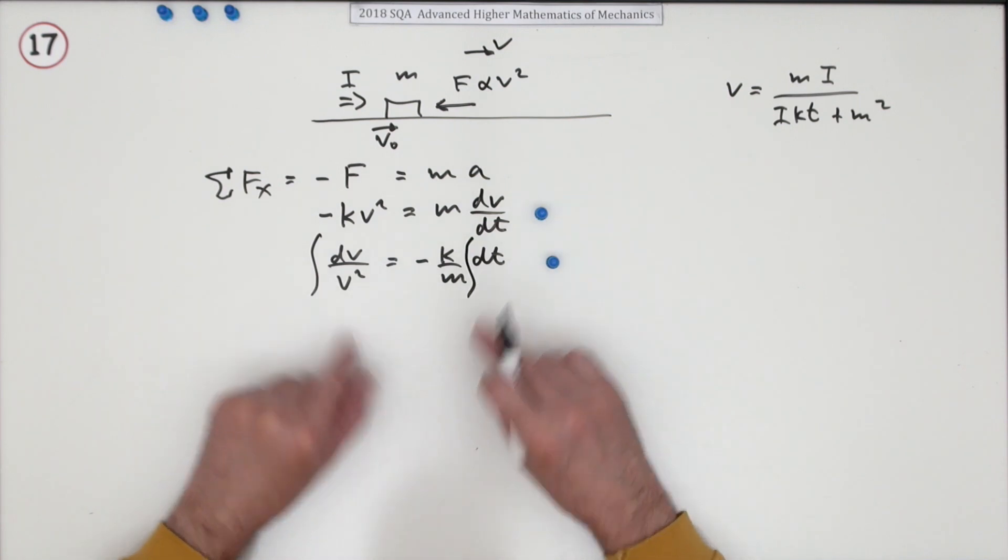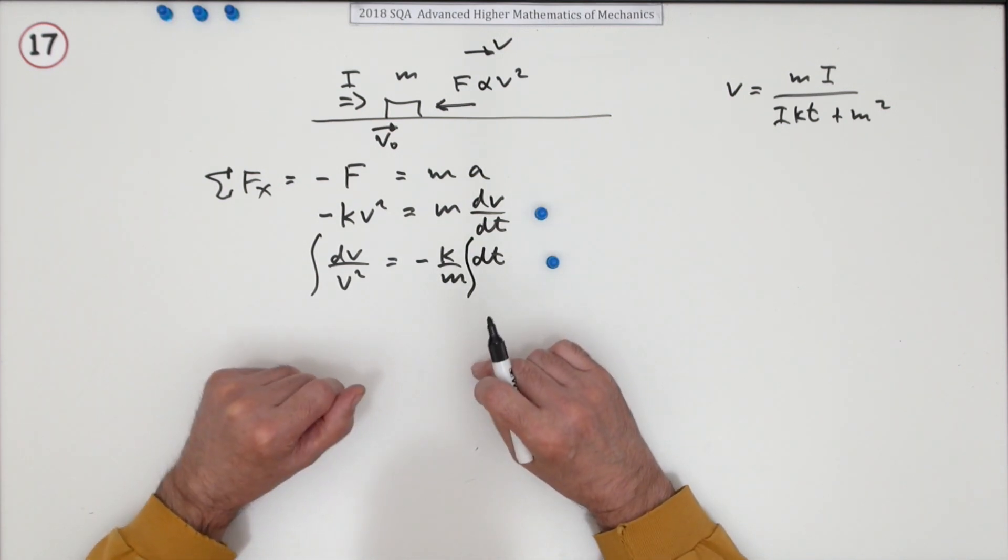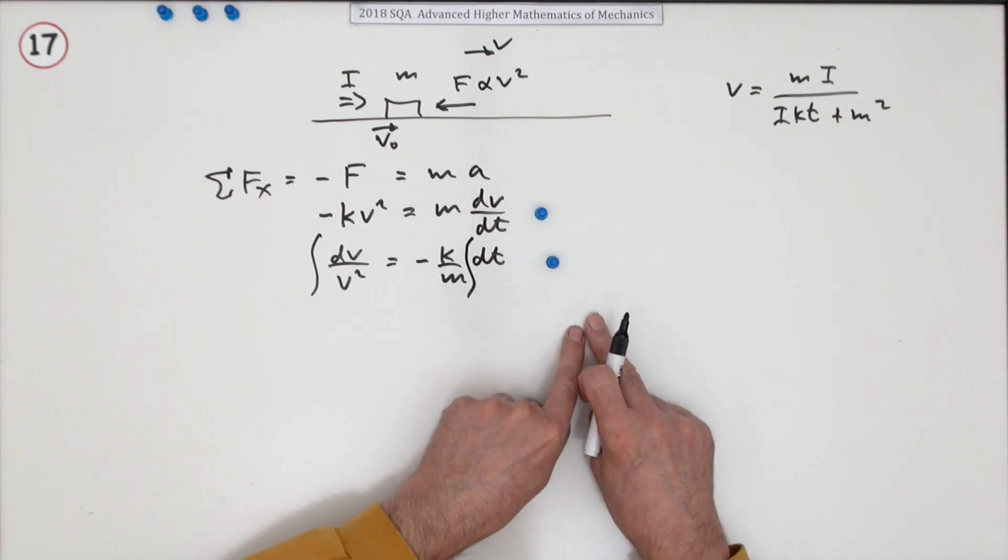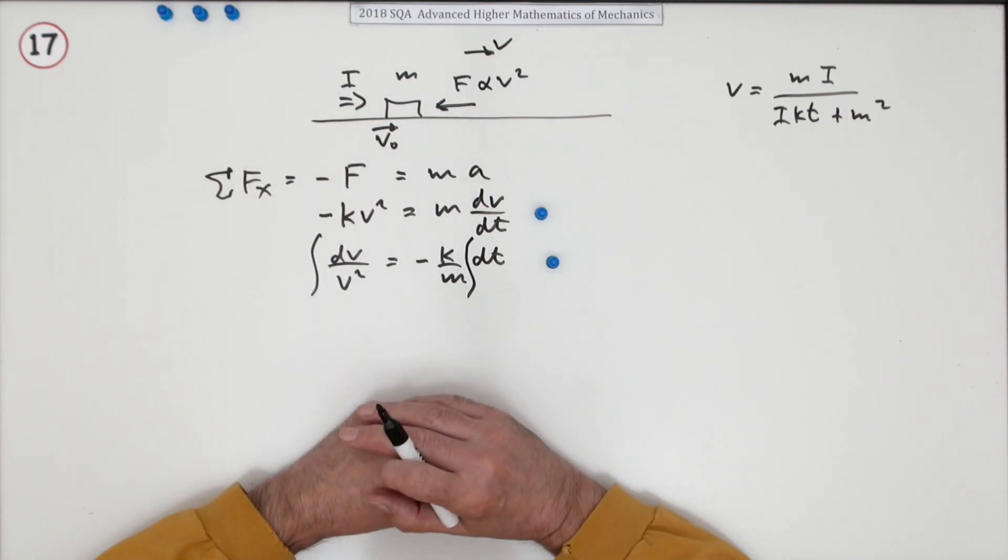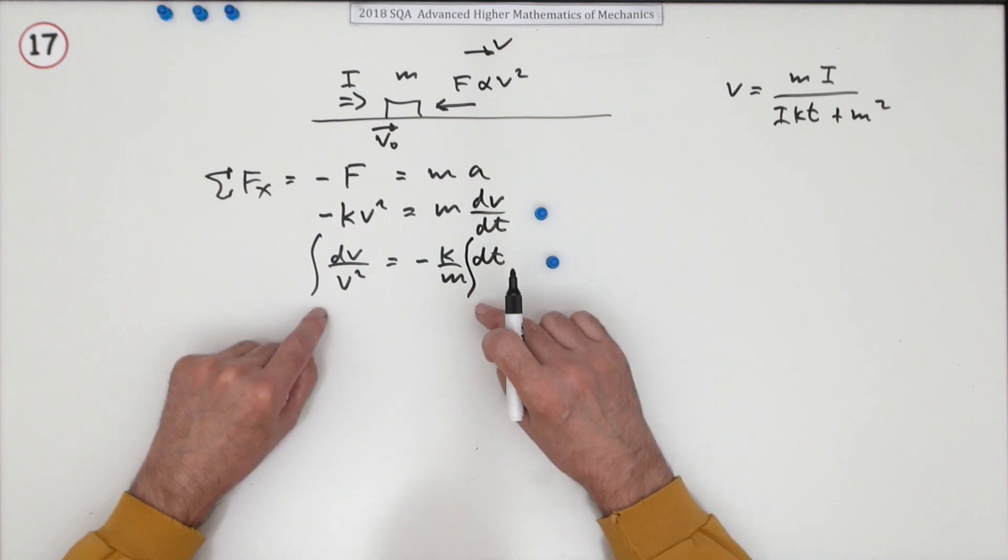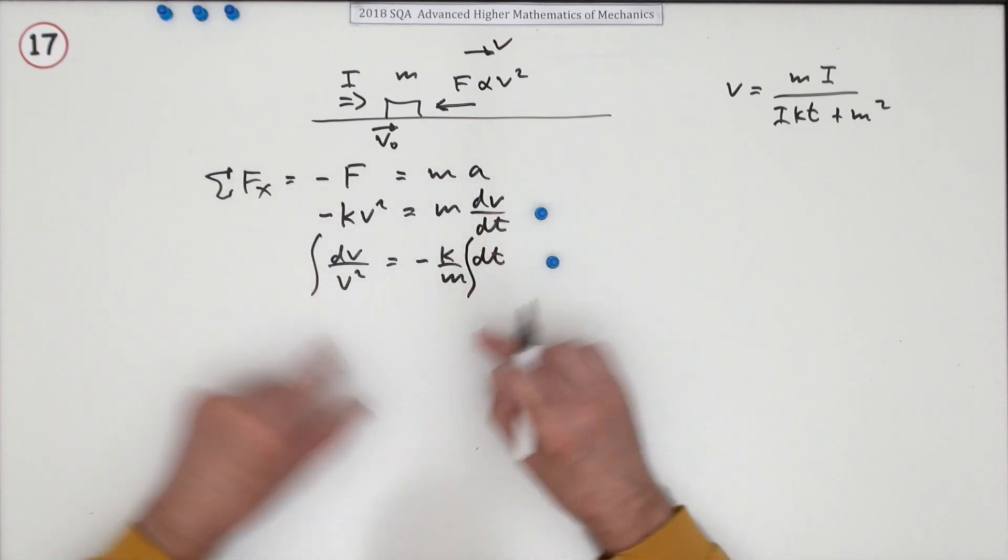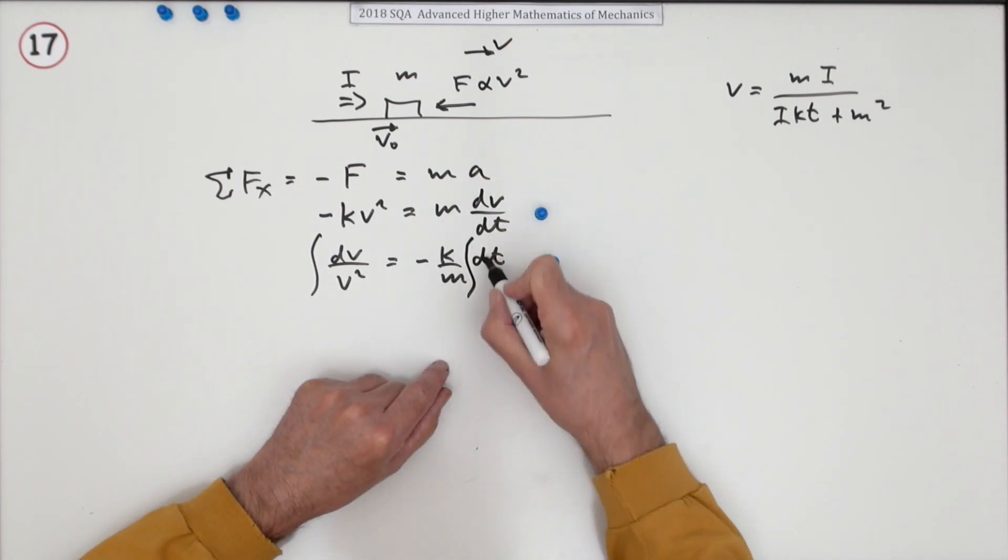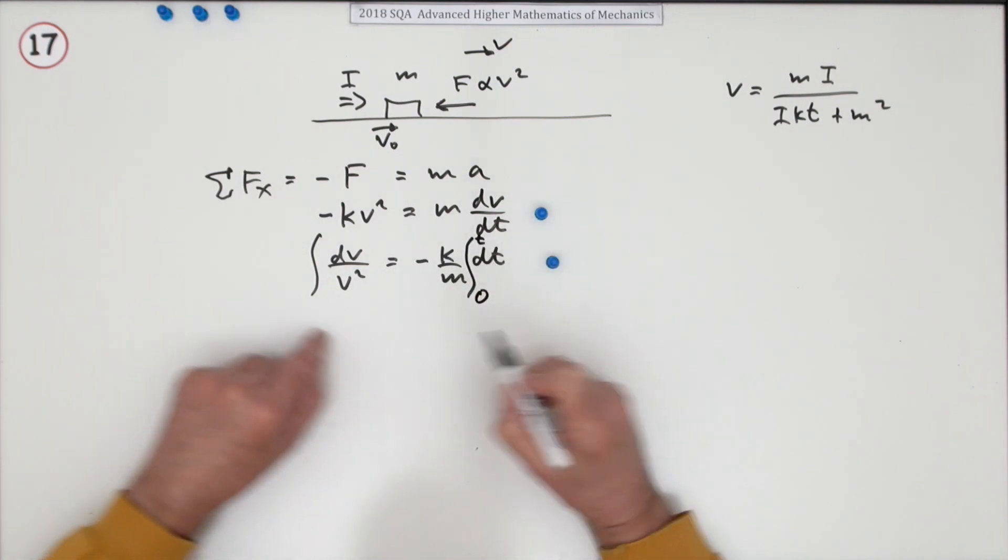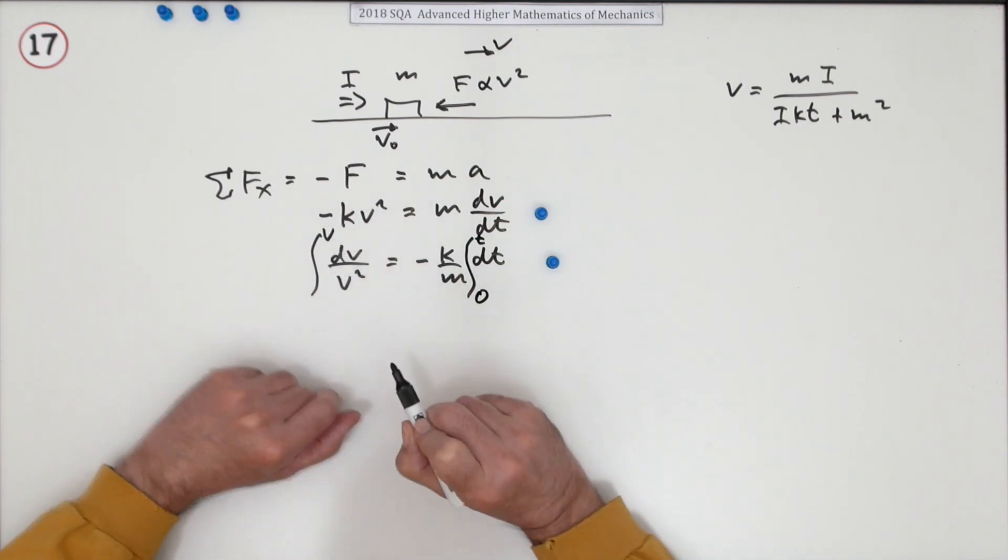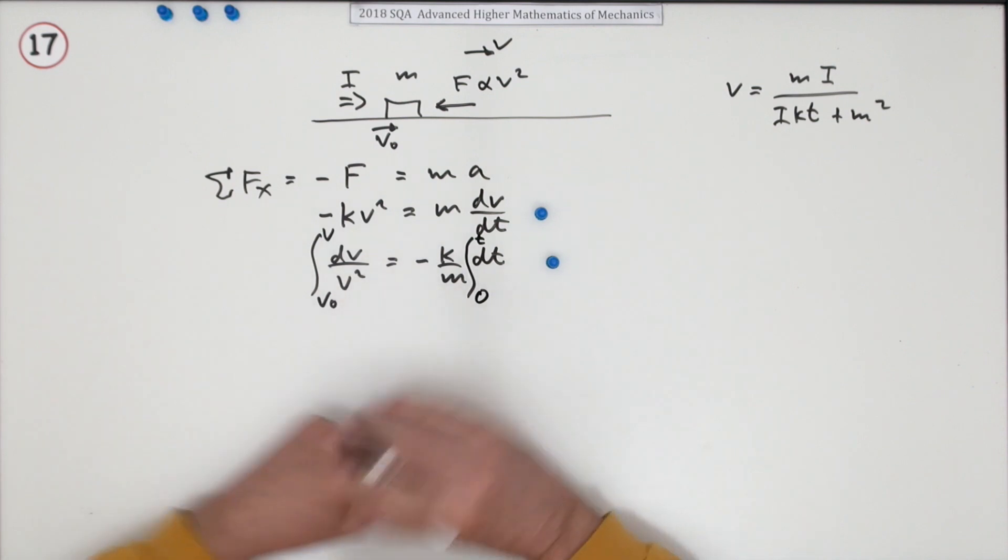That seems to be worth a mark. Now it's just a case of how do you want to go about finding the constant, or absorbing the constant? You can either integrate and have a plus C, and then put in your initial conditions to find C. Or you can integrate using the limits, which means incorporating the initial conditions to begin with. I think I'll do the integration using limits. So T obviously goes from 0 to T, and V will go from V0 to V.